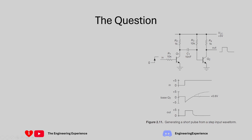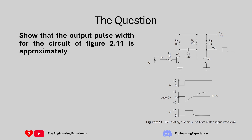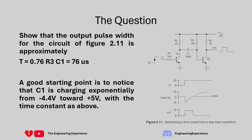Let's quickly look at the circuit and the question. The question says: show that the output pulse width for this circuit is approximately T equals 0.76 R3 times C1 — a resistor and capacitor. The question gives us a clue: C1 is charging exponentially from minus 4.4 volts towards 5 volts with that time constant.